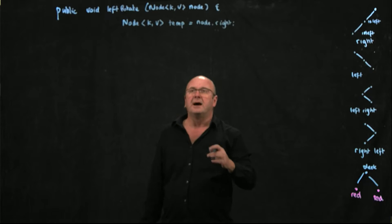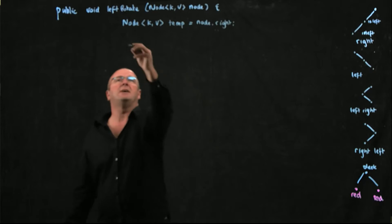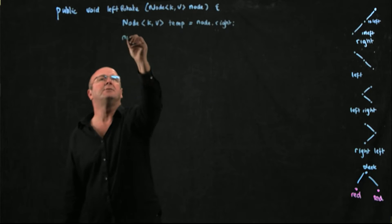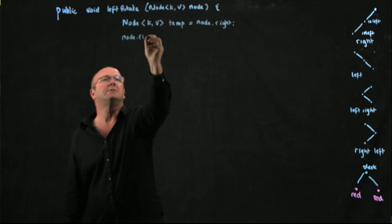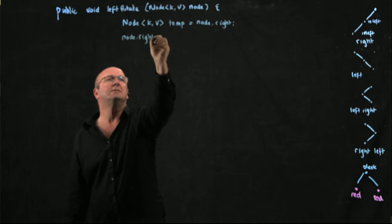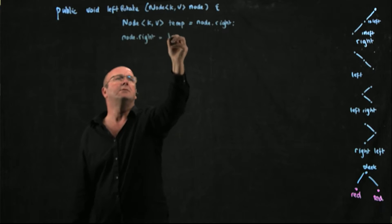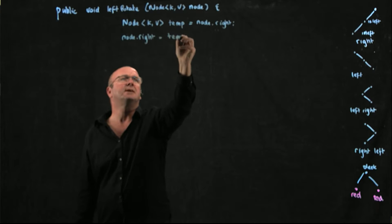Now that we've used node dot right, we can set node dot right equal to temp dot left.